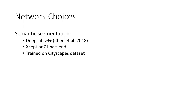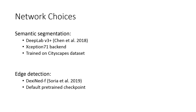We choose DeepLab V3 by Chen et al. for the semantic segmentation, as it is one of today's leading segmentation networks. DeepLab can be used with different backends; in our case we choose Xception-71. Since we emphasize autonomous driving as an application, we chose a checkpoint trained with the classes and images from the Cityscapes benchmark. For edge detection, we use DexiNet by Soria et al., again a state-of-the-art network. As edge detection is a more general task and does not rely on a certain set of classes, we use the default pretrained checkpoint provided by the authors.